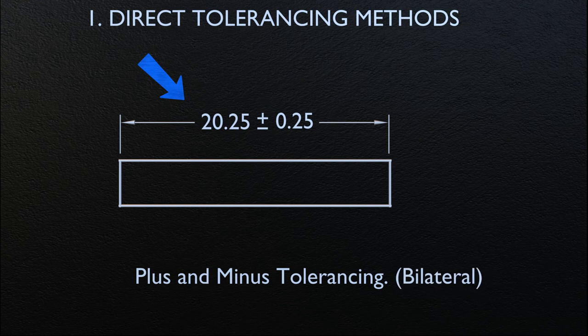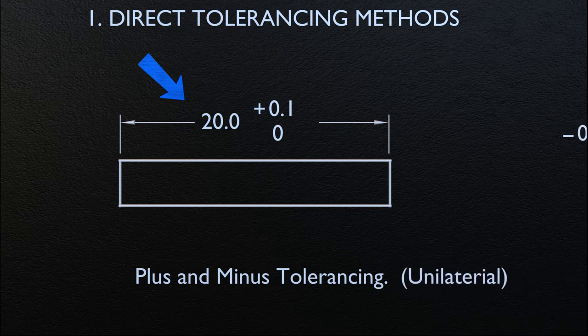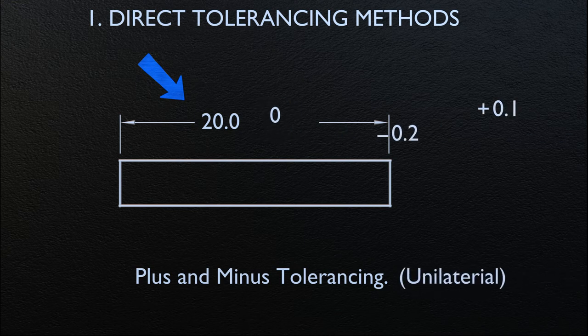Let's first take a look at bilateral tolerancing. As you can see, the plus and minus sign is followed by a tolerance value of 0.25. When the upper limit is different from the lower limit, the tolerance values are expressed separately as shown on the screen. For unilateral dimensioning, only the applicable tolerance is mentioned along with its respective sign, and the other tolerance value is kept as zero, as shown on the drawing.